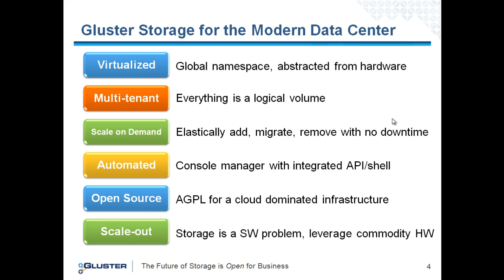Gluster has adopted the Affero General Public License for cloud-dominated infrastructure. It takes the existing GPL and ensures that proper copyleft and community contributions are preserved even when the software is being used to deliver services over a network. We treat storage as a software problem — this is the way companies like Amazon or Google treat their storage issues. Large amounts of commodity hardware clustered together, with all the intelligence in the software, designed so that we expect things to fail at the hardware level.